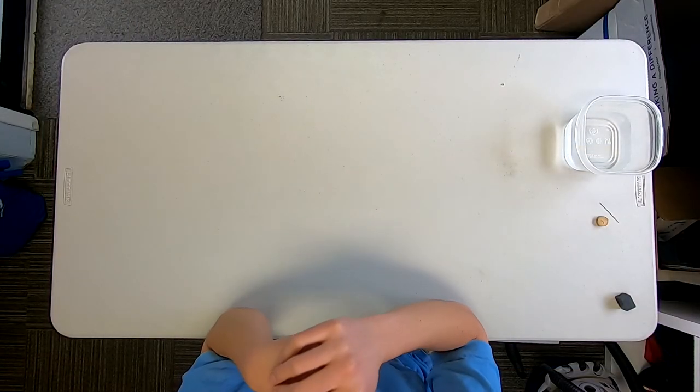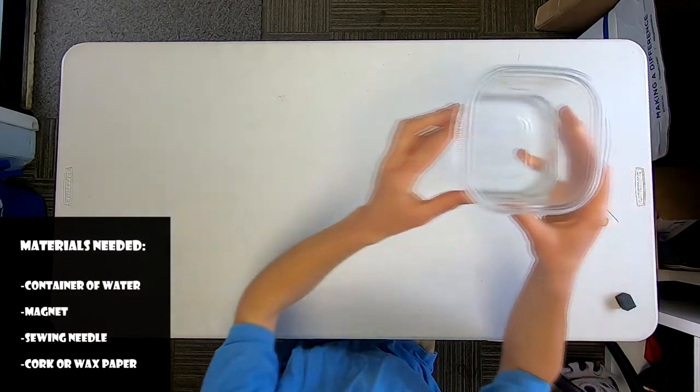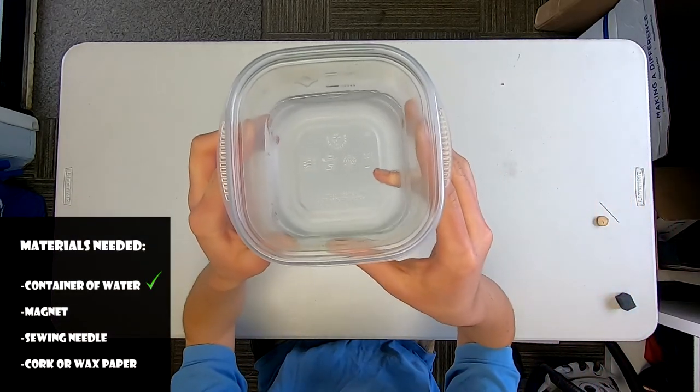Alright, so now that you know how compasses work, we're going to try making our own. Before we can start this experiment, we're going to want to gather the materials that we need. The first thing that you're going to want to get is a plastic container with some water in it.